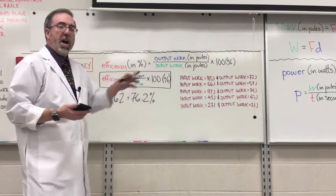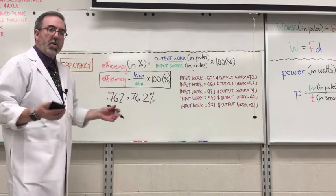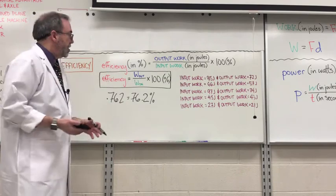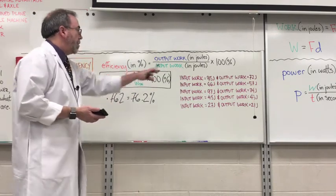Now, the reason why we multiply it by 100 and not 100% is if we take 0.762 and multiply it by 100%, what are we going to get? 0.762. So that's why we multiply it by 100 and then put the percentage after it.